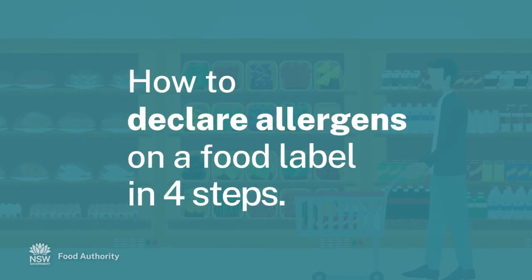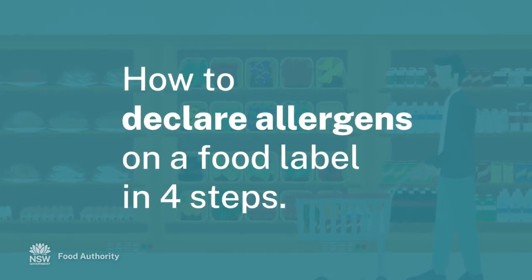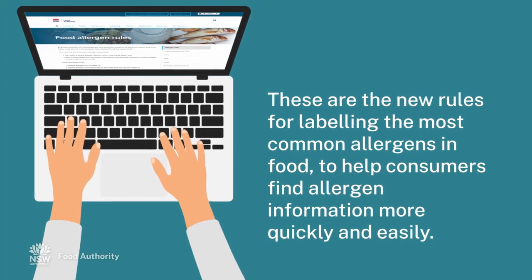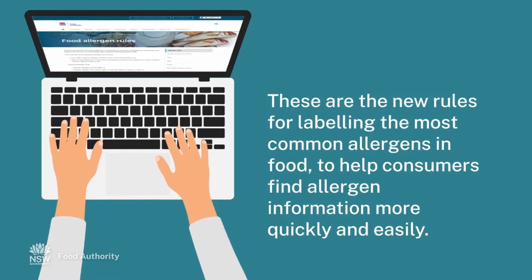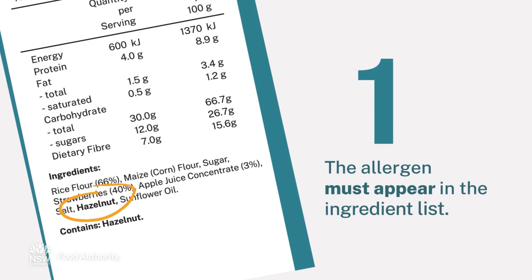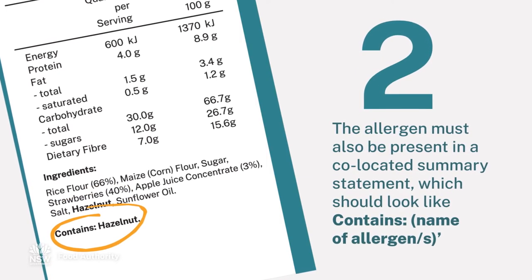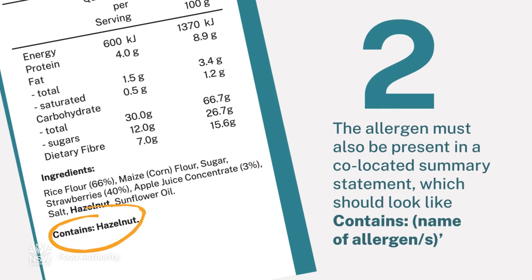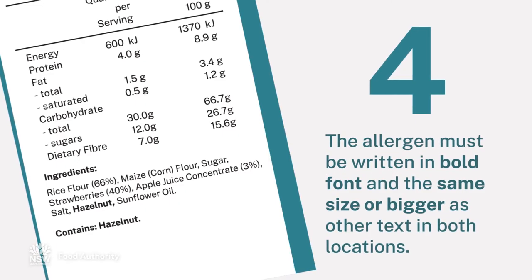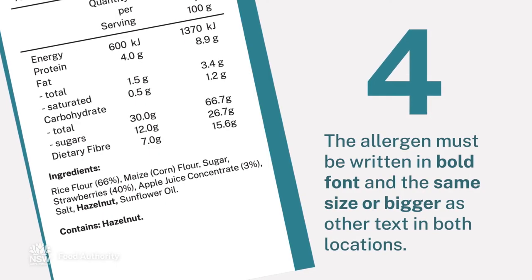How to declare allergens on a food label in four steps. These are the new rules for labelling the most common allergens in food to help consumers find allergen information more quickly and easily. The allergen must appear in the ingredient list. The allergen must also be present in a co-located summary statement, which should look like this. The allergen must use a prescribed name. The allergen must be written in bold font and the same size or bigger as the other text in both locations.